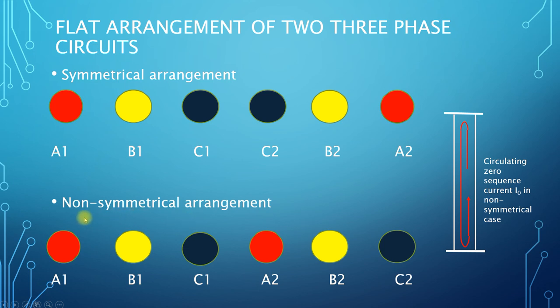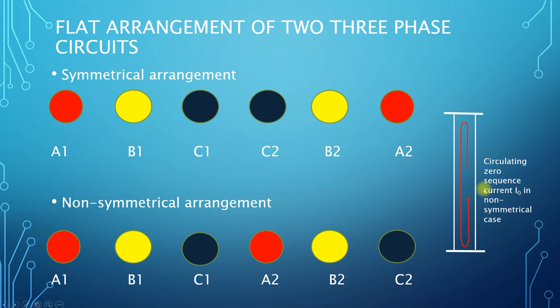An example of a non-symmetrical arrangement would be to simply lay the conductors in phase order. So in this example, we have A1, B1, C1 of circuit 1 followed by A2, B2, and C2 of circuit 2. With this arrangement, there will be a strong circulating current between the two parallel three-phase circuits.